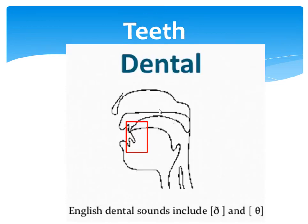The third organ is the teeth. We have the upper set of teeth and the lower set of teeth. The teeth alone cannot produce sound — we need the tongue and the flexibility of the tongue to produce sounds.